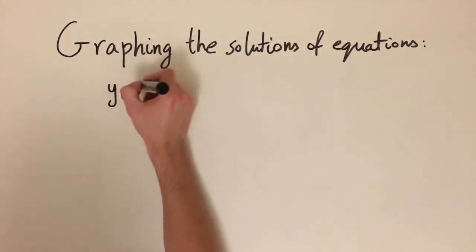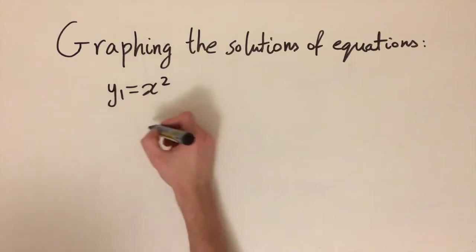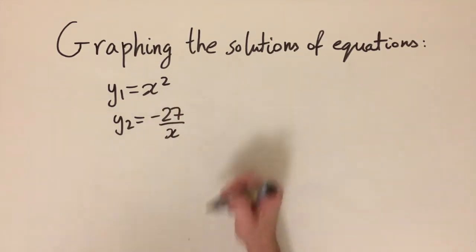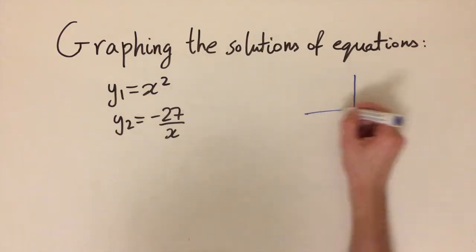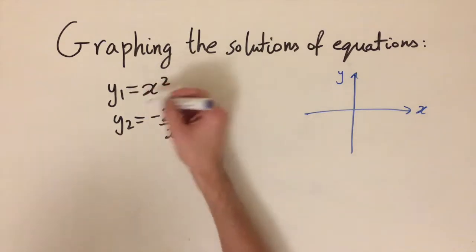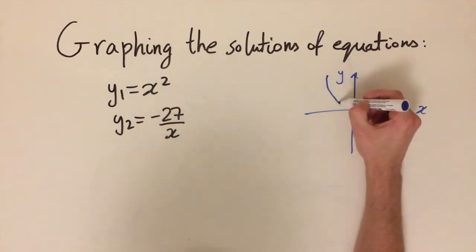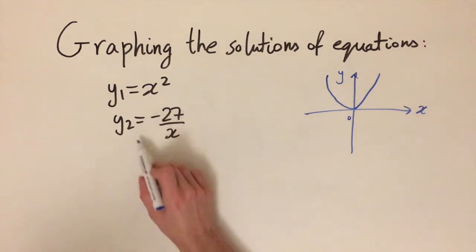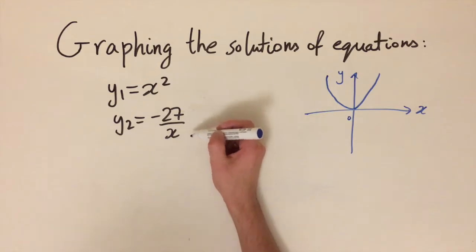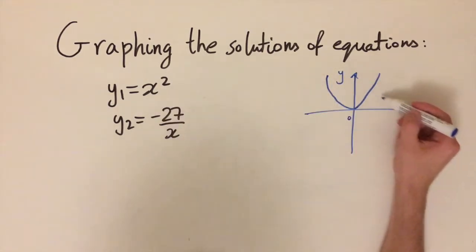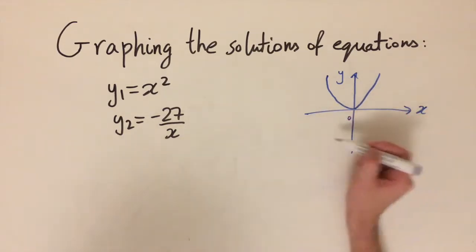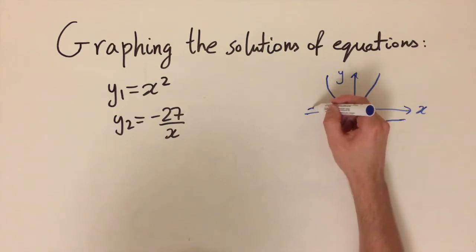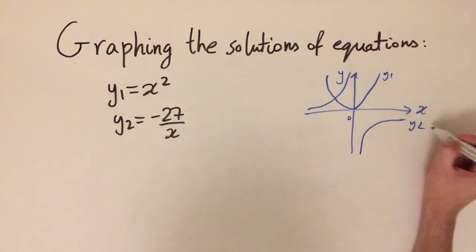For our second example, y1 equals x squared and y2 equals minus 27 over x, a reciprocal function. Sketching y1 gives the simplest parabola touching x equals 0. For y2, normally a reciprocal sits in the top-right and bottom-left quadrants, but the negative flips it so it appears in the top-left and bottom-right quadrants.